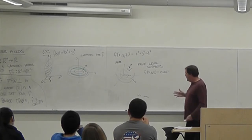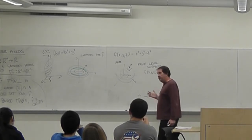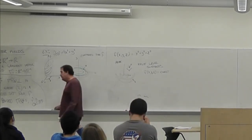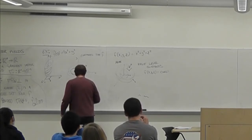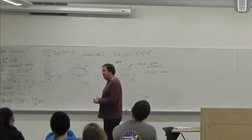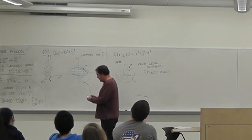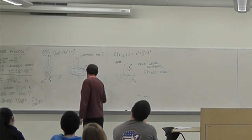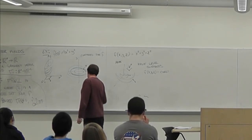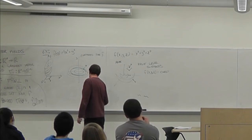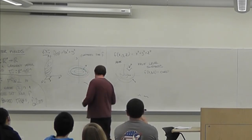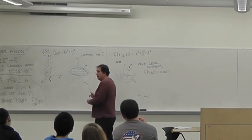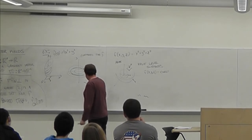Intuitively, if I have a level set, that's the direction of no increase. So the direction of maximal increase should be as quickly as you can get away from it.